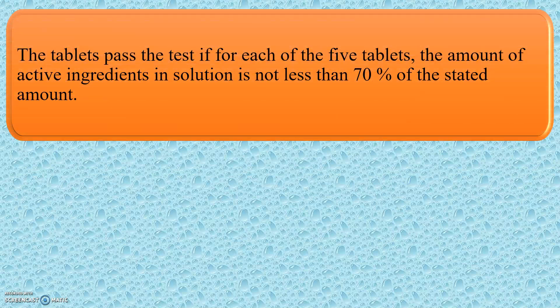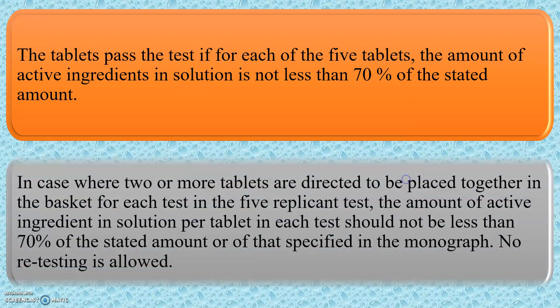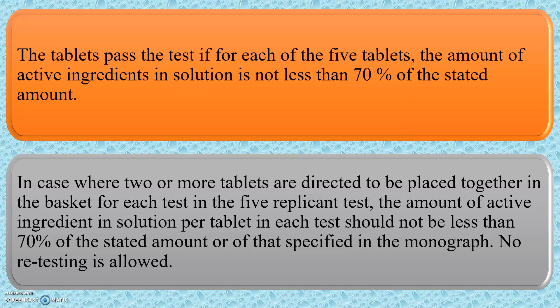The tablets pass the test if for each of the 5 tablets, the amount of active ingredients in solution is not less than 70% of the stated amount. In case where two or more tablets are directed to be placed together in the basket for each test in the 5 replicant test, the amount of active ingredient in solution per tablet in each test should not be less than 70% of the stated amount or of that specified in the monograph. No retesting is allowed.